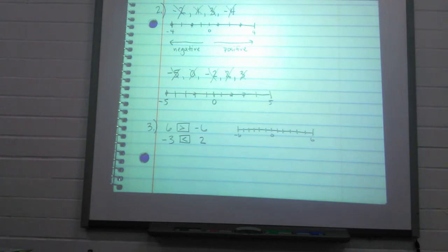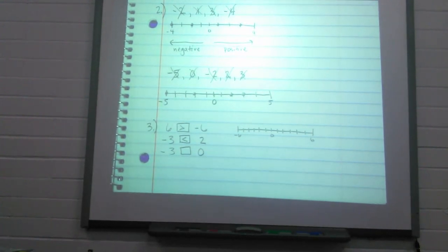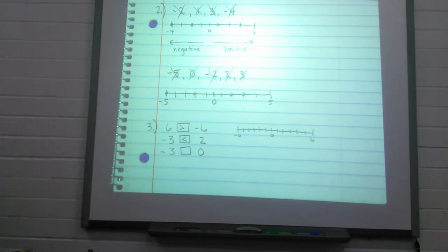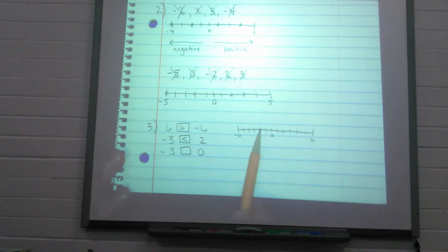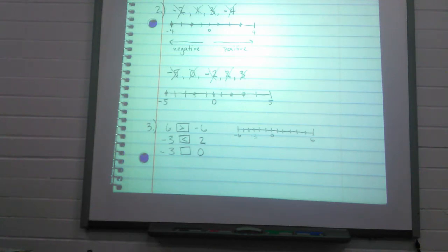Let's do negative three and zero. There's no sign with zero. Zero is right here in the middle, and if I count back one, two, three, negative three is less than zero. Thinking about it in terms of money always helps: would you rather have no money, or no money and owe somebody three dollars? You'd rather just have no money and not owe anybody anything.